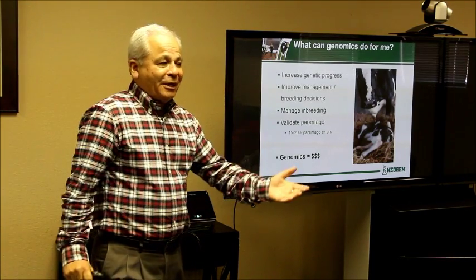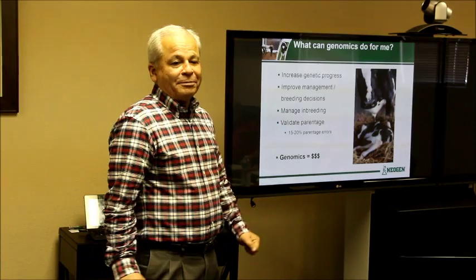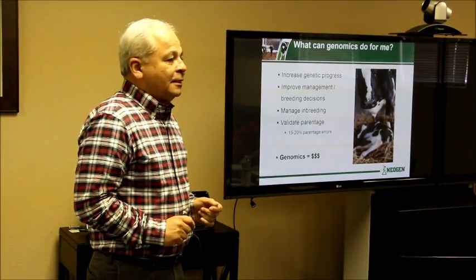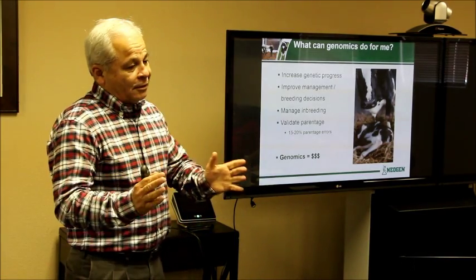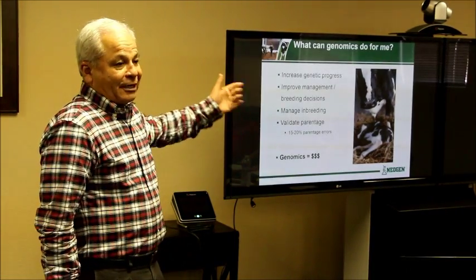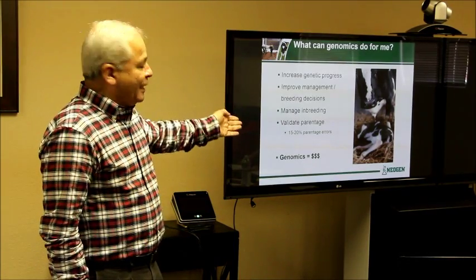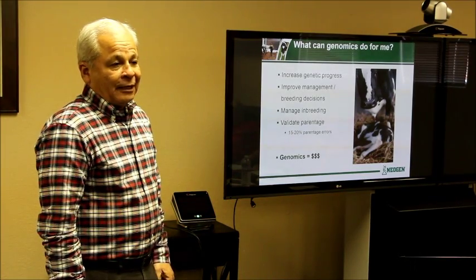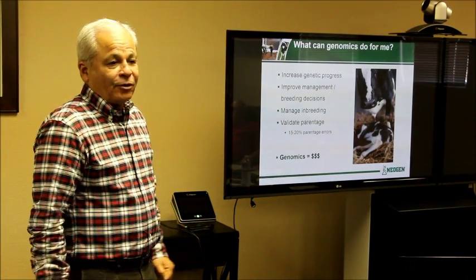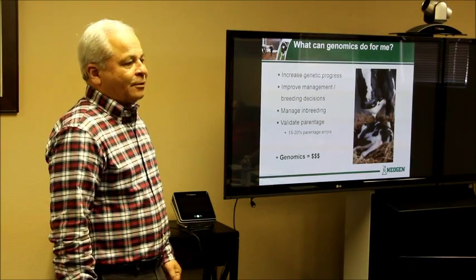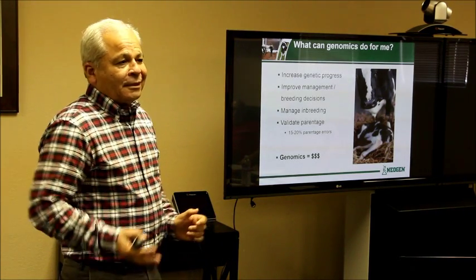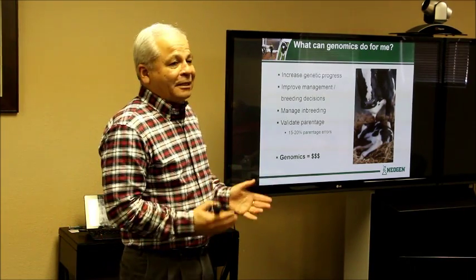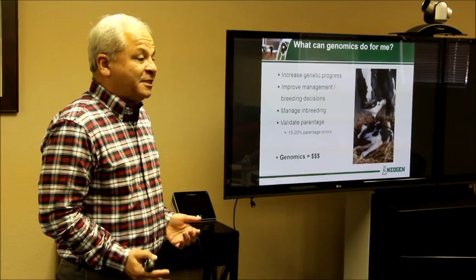So identify the paternity correctly. We find that about 15 to 20 percent of them are wrong. We were talking earlier about one farm that was over 80 percent wrong. You would think how could it be 80 percent — it should be at least 50-50 — but no, this was a constant mistake that was being made. They weren't writing things down correctly.